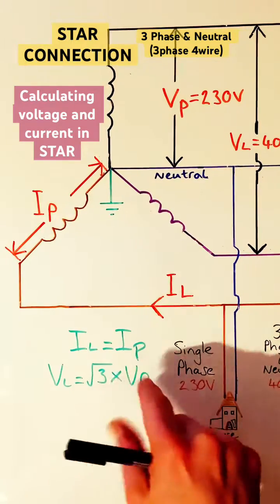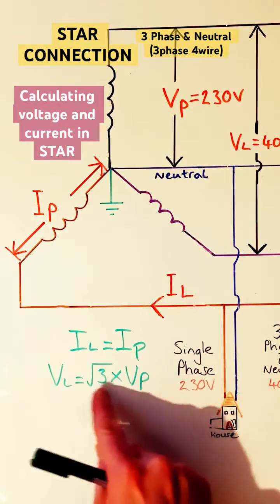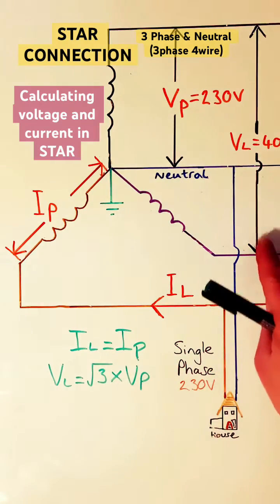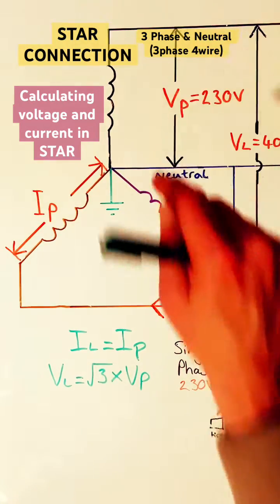In the star connection, the line current is the same as the phase current, but we have two different voltages. The line voltage is a square root of three multiplied by the phase voltage.